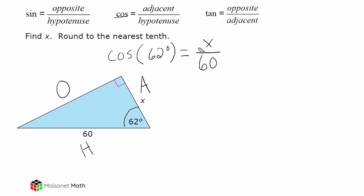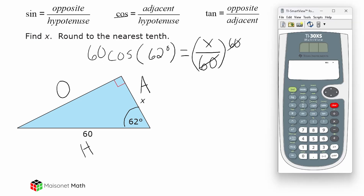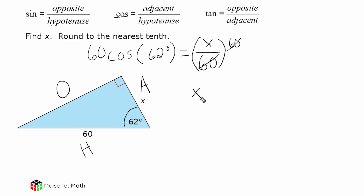Now we have to isolate our variable x. Because we're dividing by 60, we multiply by 60 on both sides to balance our equation. So let's type in 60 times the cosine of 62 degrees, and that gives us 28.1682 and some change. We round this to 28.2, so x is approximately equal to 28.2 units.